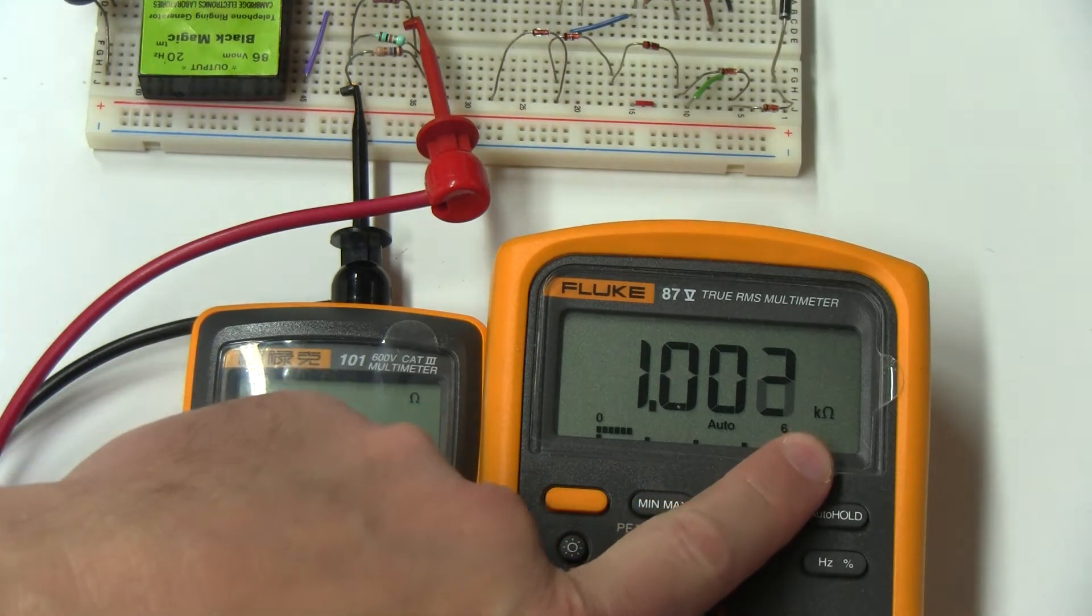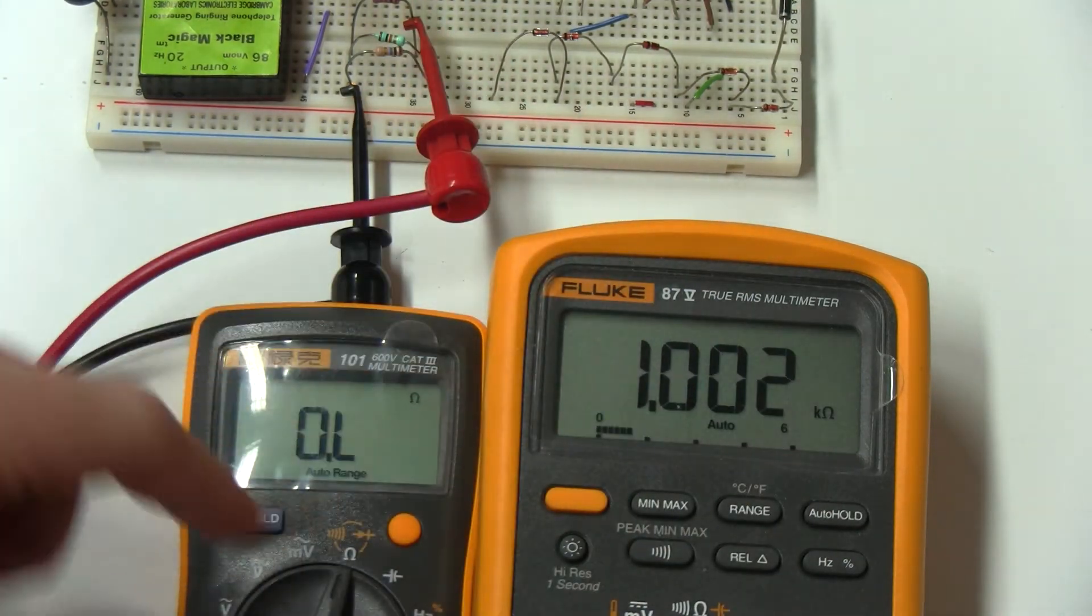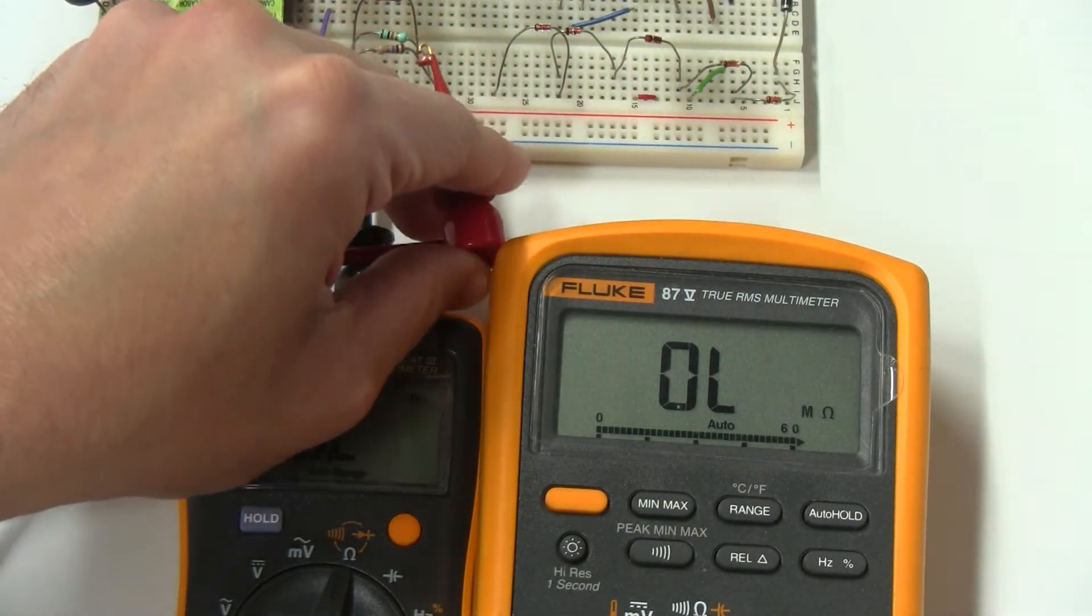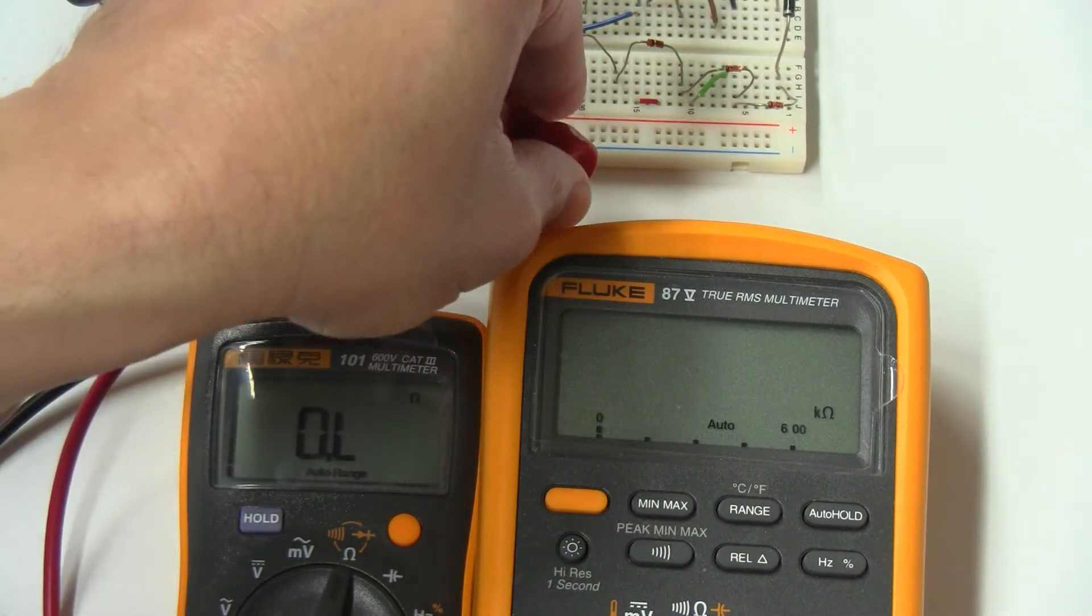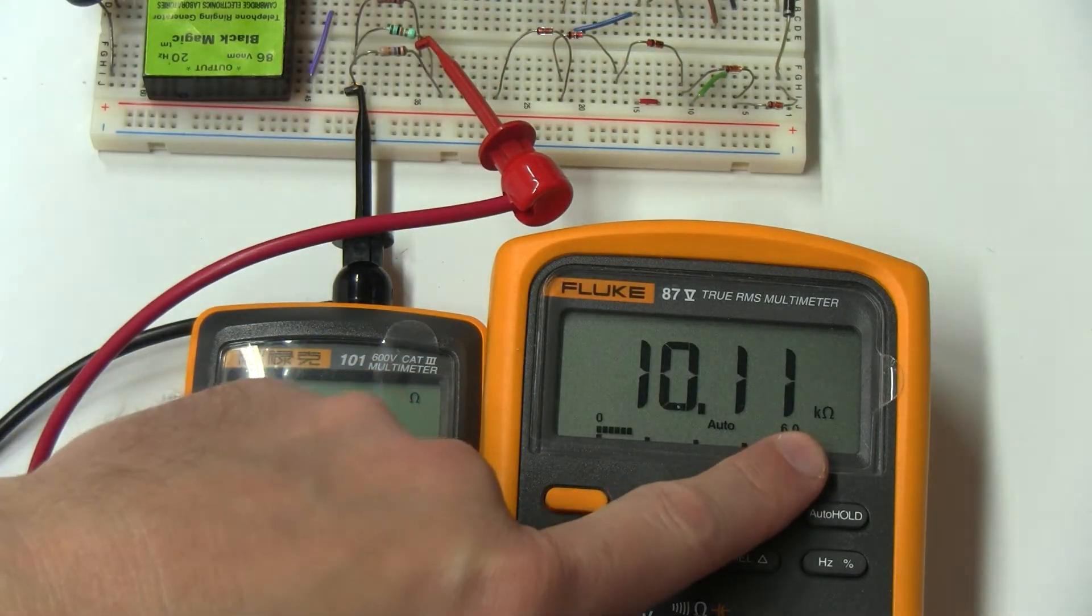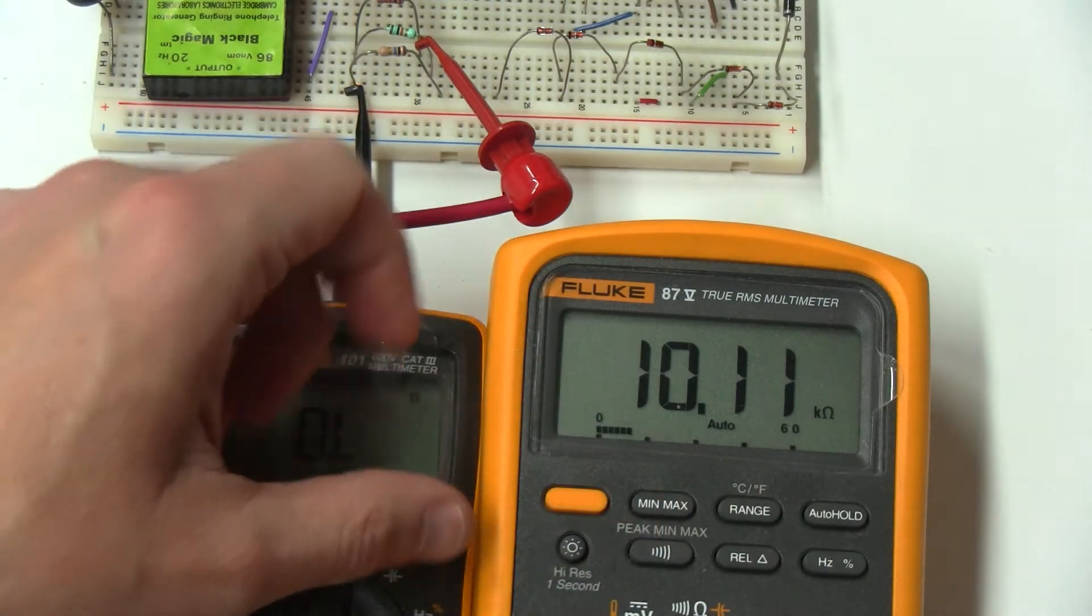See how it changed to K when I measured one of the resistors. I could measure another one, and it goes to K.